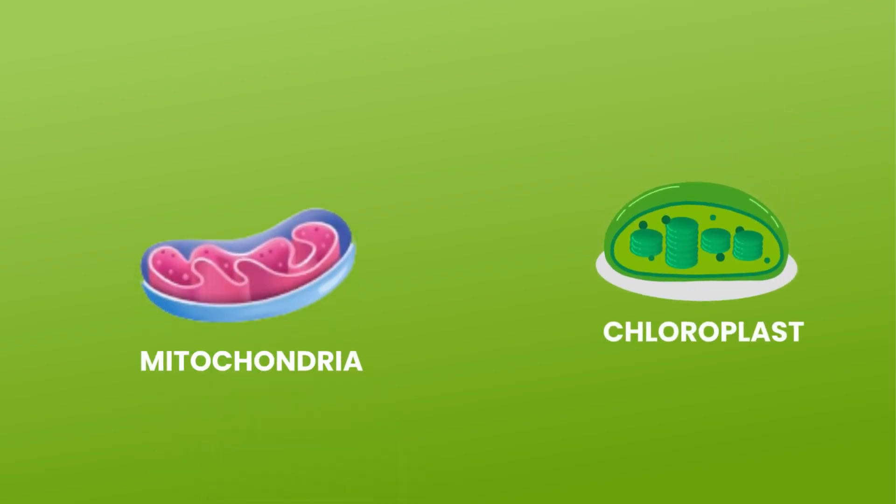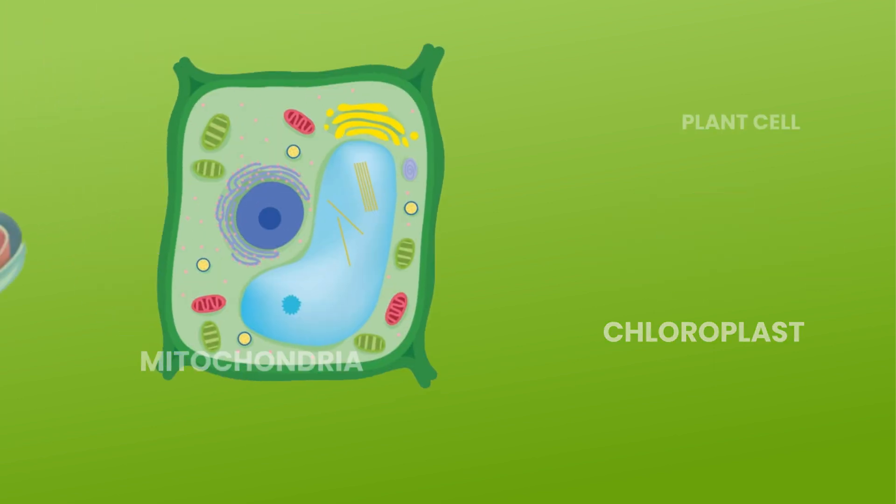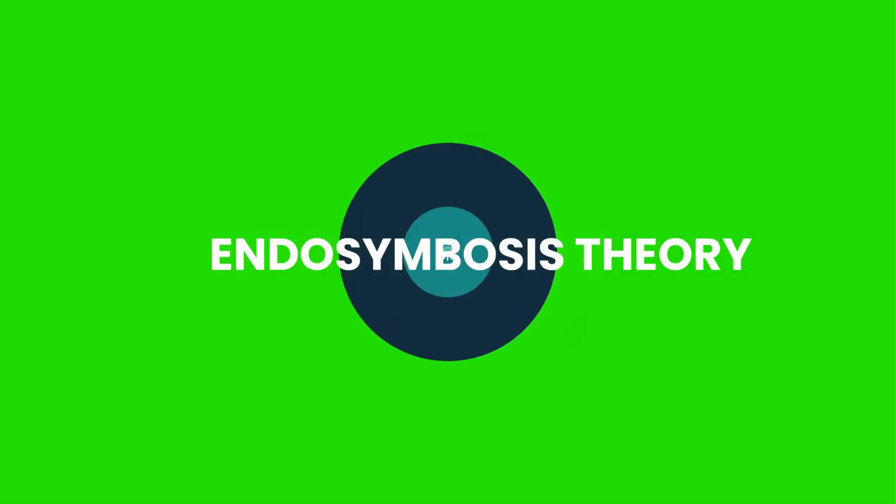Today, mitochondria and chloroplasts would not be able to survive outside a cell, but according to the endosymbiotic theory, they were once independently living cells.